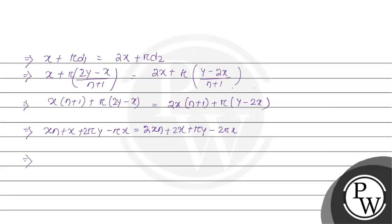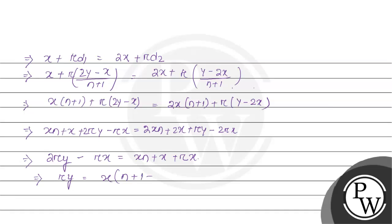Solving this, we get: 2ry minus ry equals xn plus x plus rx minus rx, which simplifies to ry equals x(n plus 1 minus r). That implies x divided by y equals r divided by (n plus 1 minus r). That will be the final answer. I hope you understood the explanation. Thank you.